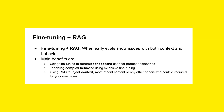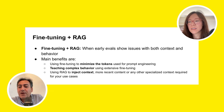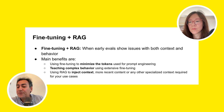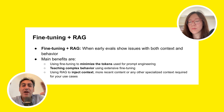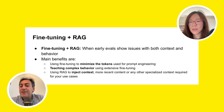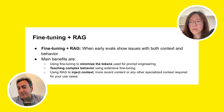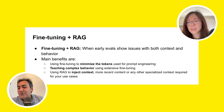What does dynamically including few-shot examples mean? Depending on the user question, you don't always need a fixed list of examples. You could have hundreds of examples, so you don't want to include all of them in the prompt. Depending on the user question, you find relevant examples and include only those. If you always include the same five examples regardless of the question, that's fixed few-shot. But if you change those examples based on the question, that's dynamic few-shot.